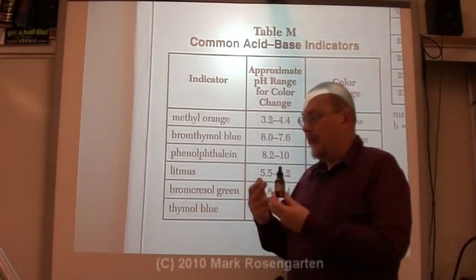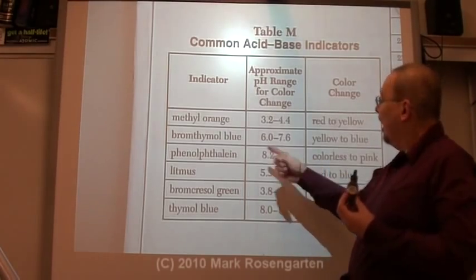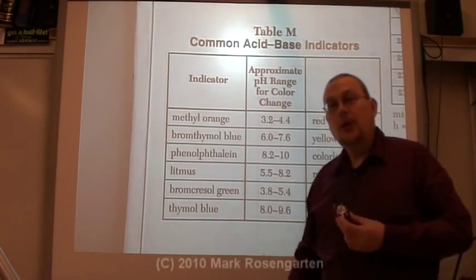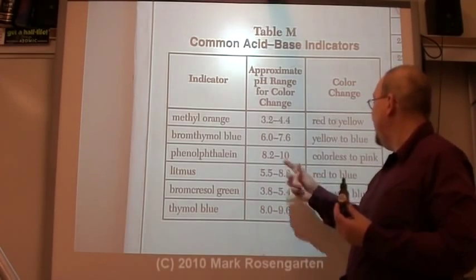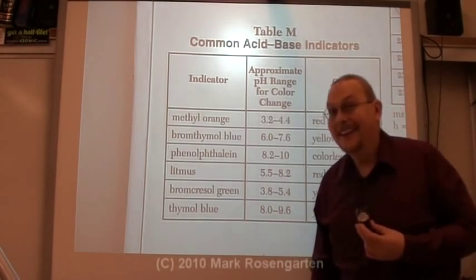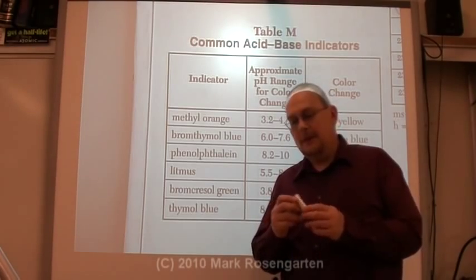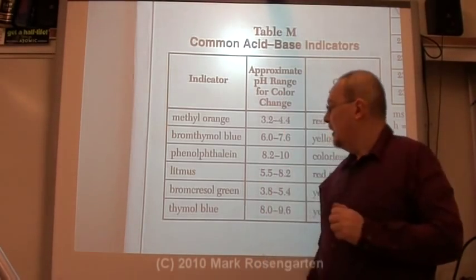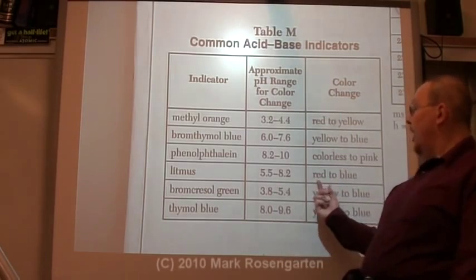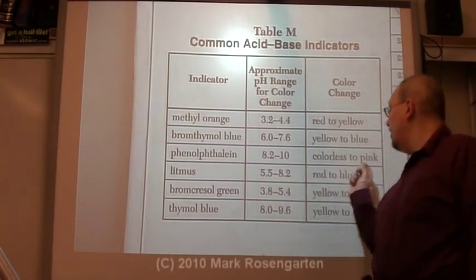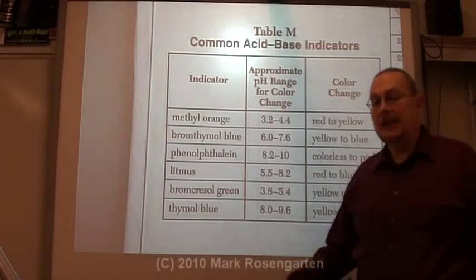My personal favorite is phenolphthalein, which is colorless up to a pH of 8.2, where it turns light pink, and then at a pH of 10 it's kind of hot pink. Litmus comes in many different forms, the most common of which is litmus paper. At a pH of 5.5 or less, litmus is red; at a pH of 8.2 or higher, it's blue; and in between it's kind of purplish.